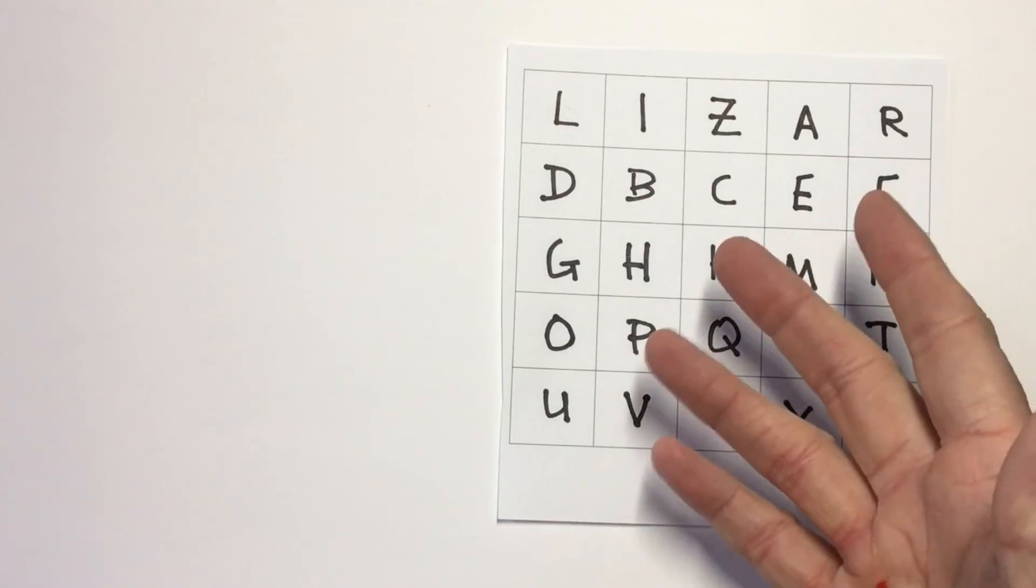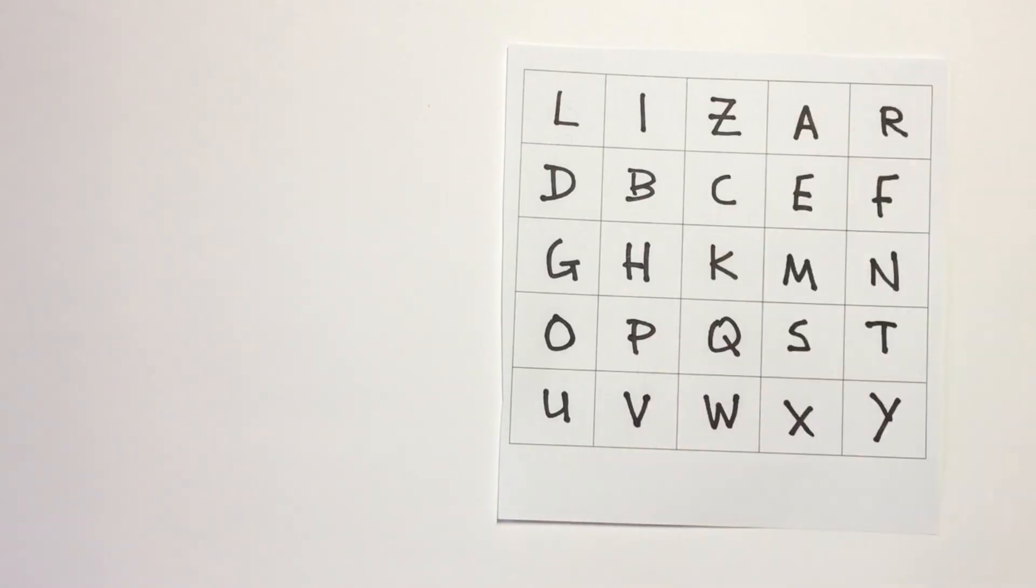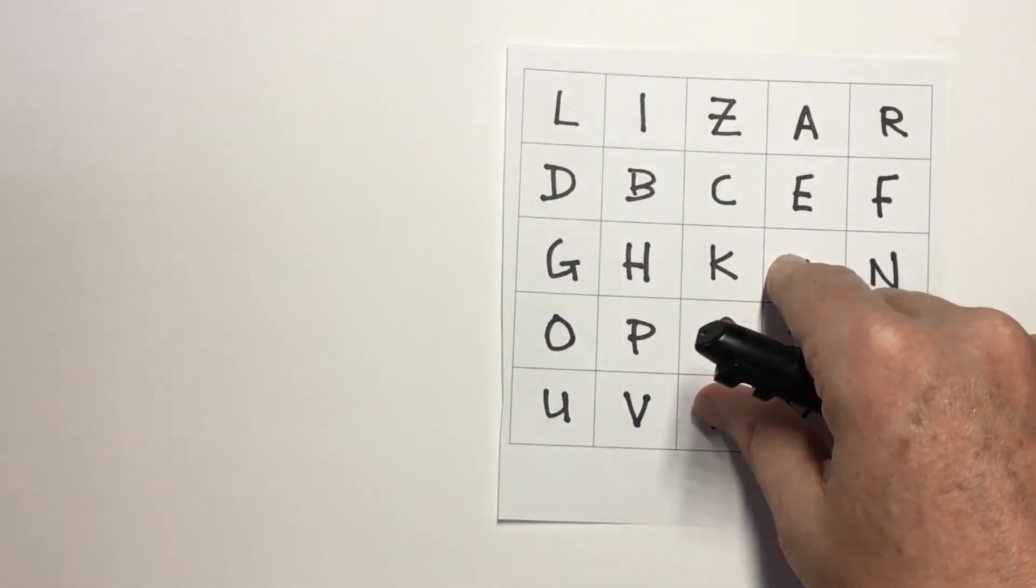If we ever think our code's been discovered, we can just change the letter. The first, the keyword. Use a word, like I say, like pencil or birthday or whatever word we can think of. Okay. So, let's see just how different that makes things.